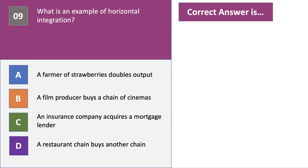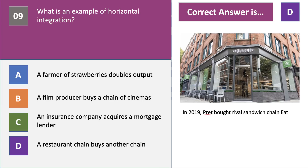Two more questions. What is an example of horizontal integration? The correct answer is D — a restaurant chain buys another restaurant chain. For example, in 2019 Pret a Manger bought the rival sandwich chain EAT, which saw EAT disappear from the high street. Pret was looking to fast-forward its veggie format and saw EAT as a way of doing that.